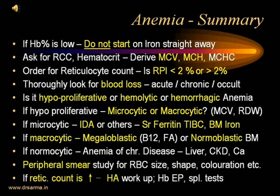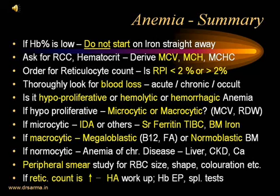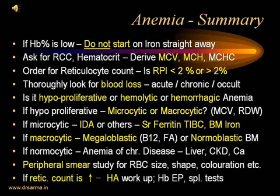Dear friends, we have come to the last slide — let us summarize the important points of anemia diagnosis. If hemoglobin is low in a given patient, do not rush to start iron treatment straightaway, because all patients of anemia are not due to iron deficiency. There are several other causes to identify and exclude before we say a given case is iron deficiency anemia. This is true particularly in adult individuals, who have lesser tendency to develop iron deficiency anemia but greater tendency to have some underlying serious illness like malignancy or a bleeding disorder.